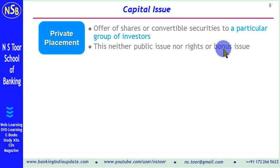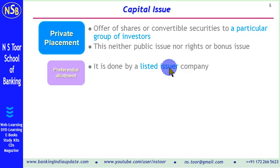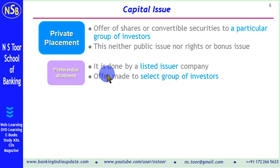Private placement has three variants. The first one is preferential allotment. This is done by a listed company, and the offer is made to a select group of investors. The company, on a private basis, makes an offer of new shares to a select group of investors. This is called preferential allotment.